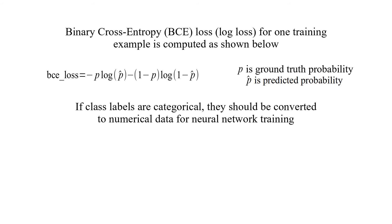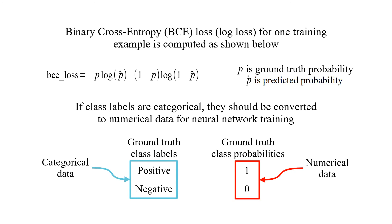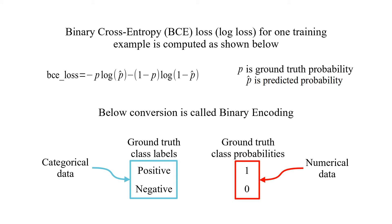If class labels are categorical, they should be converted to numerical data for neural network training. This conversion is called binary encoding.